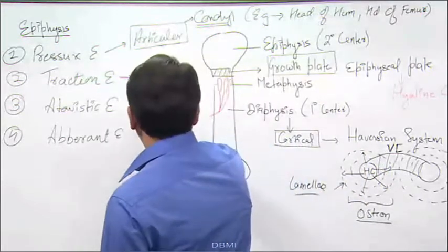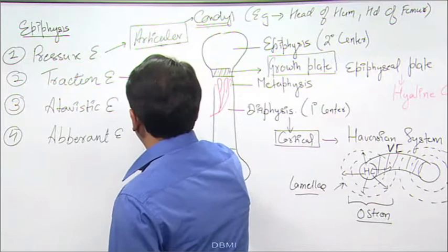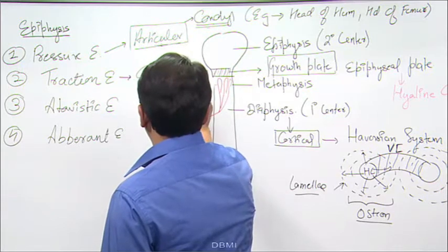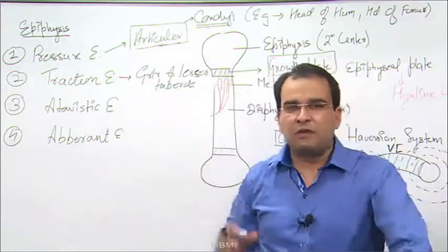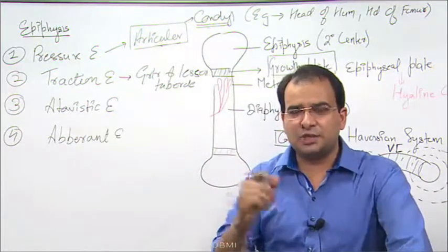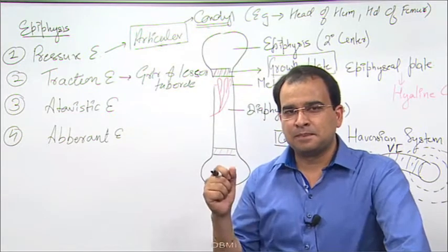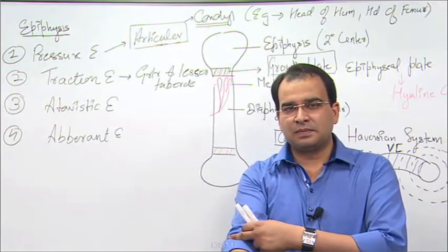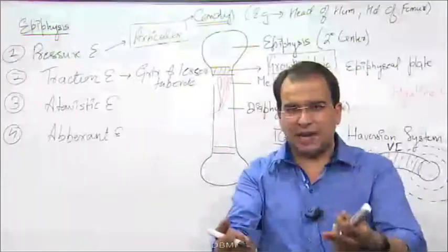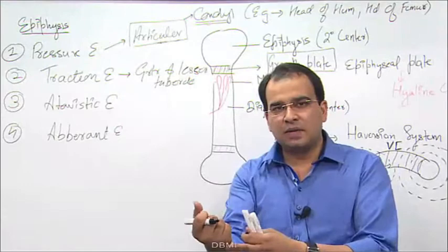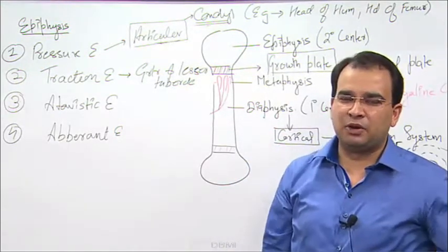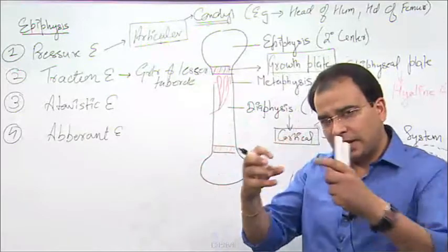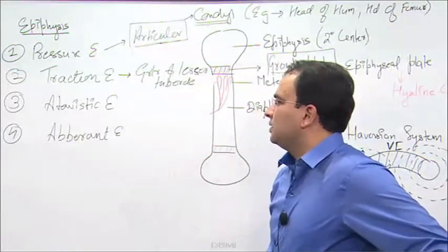To summarize the examples: greater and lesser tubercle, greater trochanter, lesser trochanter, medial epicondyle, lateral epicondyle, styloid process — both radial styloid and ulnar styloid — and both the malleoli, medial and lateral malleoli. Even the mastoid process — all these projections of a bone which are developed due to traction are regarded as traction epiphysis.